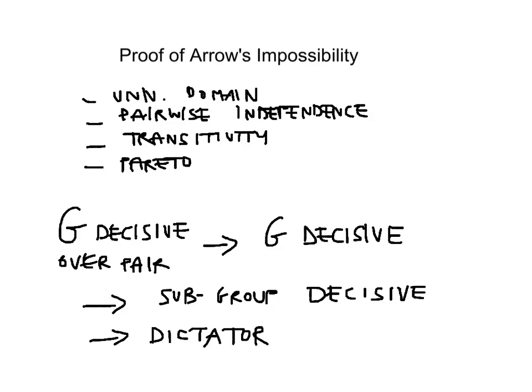By definition, a dictator is one individual whose preference is decisive over all pairs, so that the social ranking reflects that individual's preference. It is a very elegant proof: starting with the Pareto criterion applied to society at large, you can show that it entails the existence of a dictator. That is Arrow's impossibility theorem — the unavoidability of dictatorship if the social welfare functional is rational, i.e. transitive, and the other axioms are met.